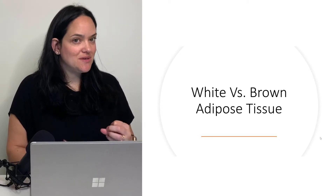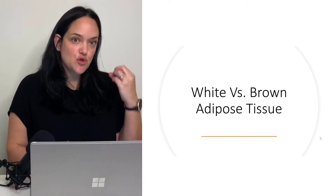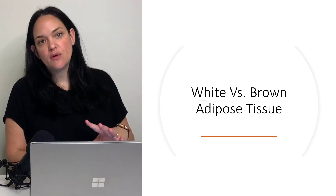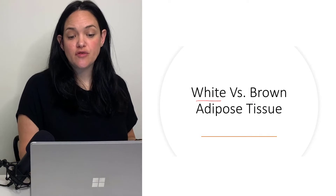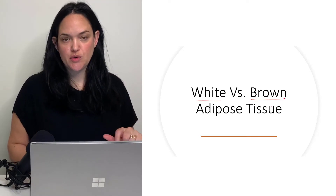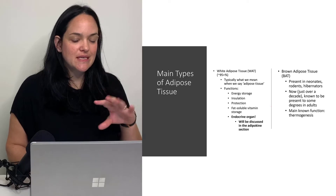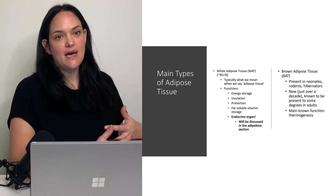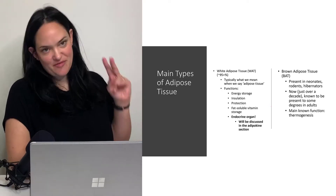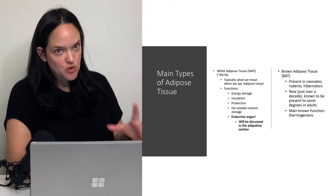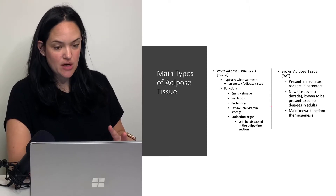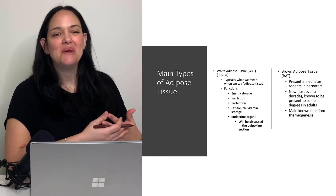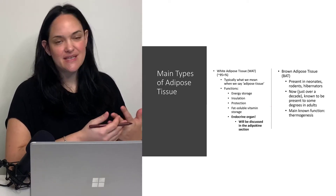Not all adipose tissue is made the same. The majority of adipose tissue on our body is white adipose tissue, but we'll also learn about brown adipose tissue in another module. White adipose tissue is typically what we mean by fat — the majority of our adiposity — and it has a number of functions. The main function we typically know of is energy storage.